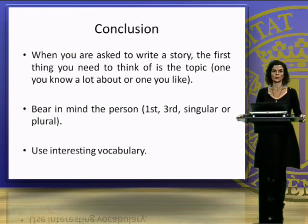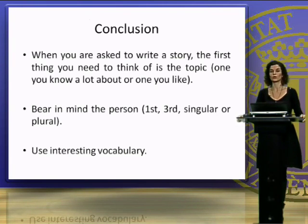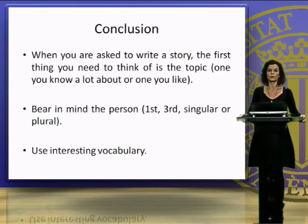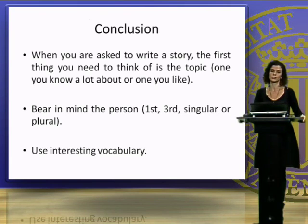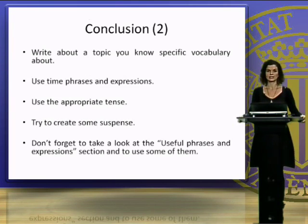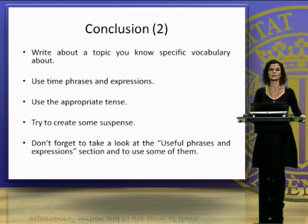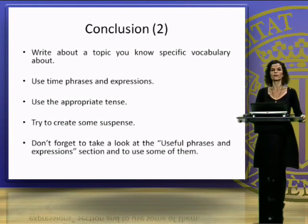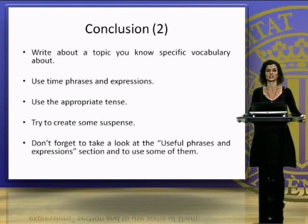When you are asked to write a story, the first thing you need to think of is the topic — one you know a lot about or one you like. As we said before, you should bear in mind the person: whether you are talking about yourself, use the first person singular; about yourself together with other people, use the first person plural; and if you are talking about other people, use the third person, either singular or plural. Try to use interesting vocabulary. Write about a topic that you know some specific vocabulary about. Use time phrases and expressions. Also use the appropriate tense. Try to create some suspense. And don't forget to take a look at the useful phrases and expressions section in this presentation in order to learn how to use some of these expressions.